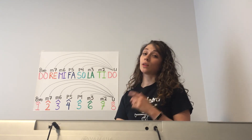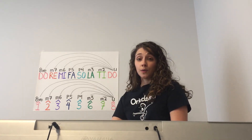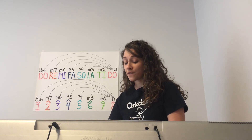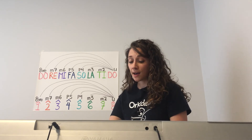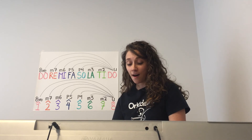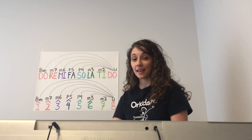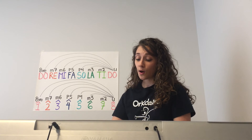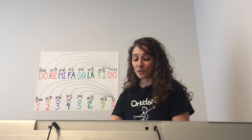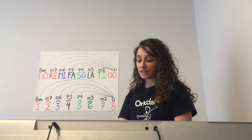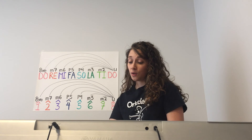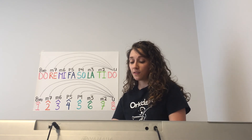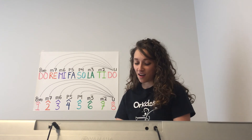Now let's do it with the interval names, starting with unison. Sung three times: Unison — minor second — minor third — perfect fourth — perfect fifth — minor sixth — minor seventh — octave. Each interval name is sung as high do is paired with each descending note of the major scale.